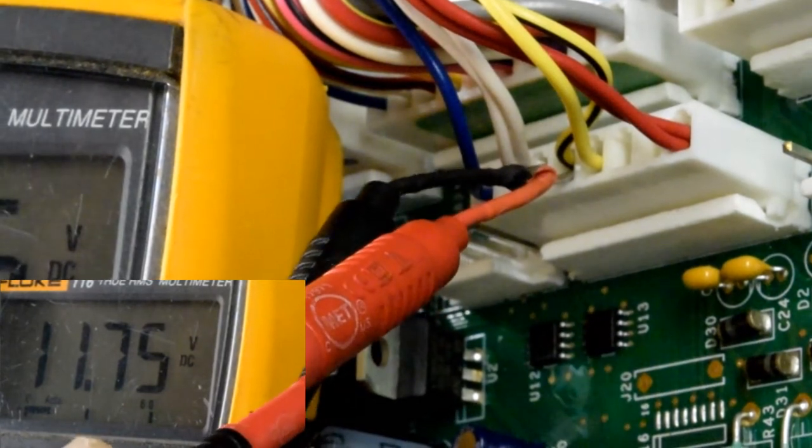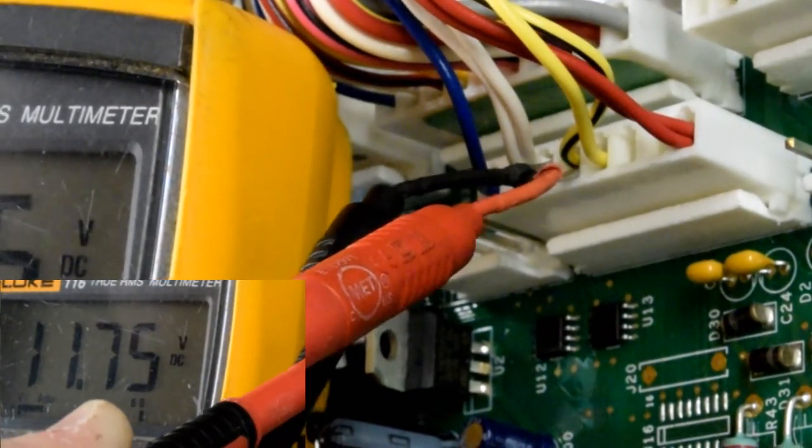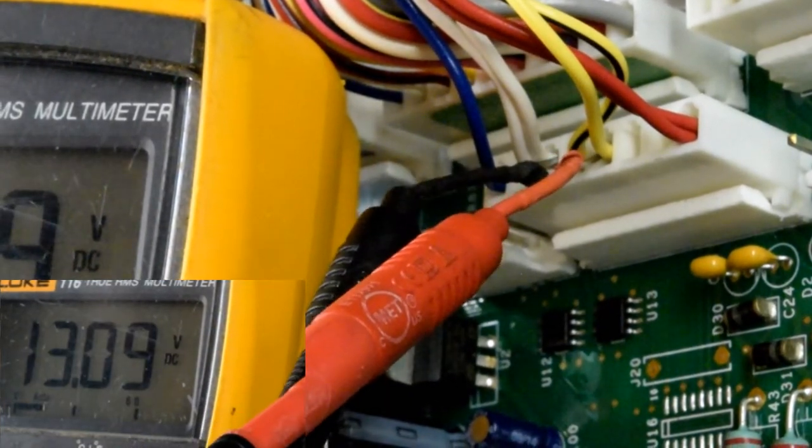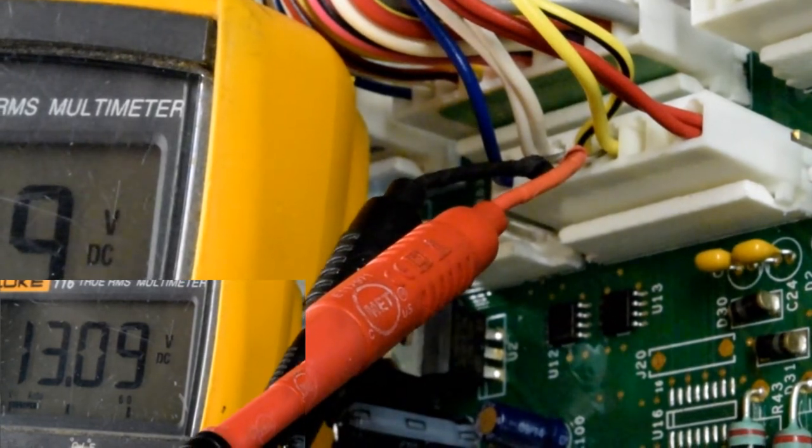The next test is the condenser fan motor. Again, leave the black where it's at, move the red to the right one pin slot. Now you're on pin number 5 - should read between 12 and 14 volts.